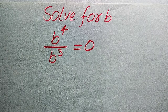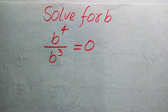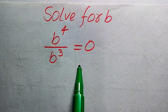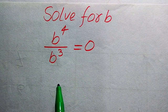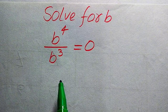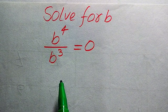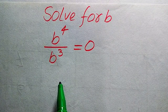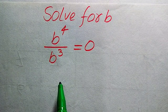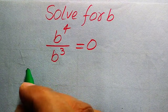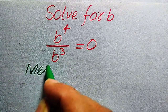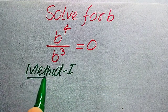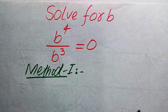Hello everyone. How to solve this problem for the values of b if we have b to the power of 4 divided by b cubed equals 0. We solve this problem for all the values of b. First we need to find all the roots of this equation, and at the end we will verify which roots are solutions and which are extraneous roots. We solve this problem using two methods.